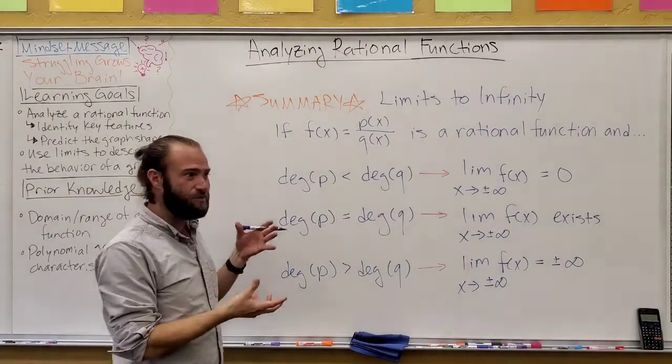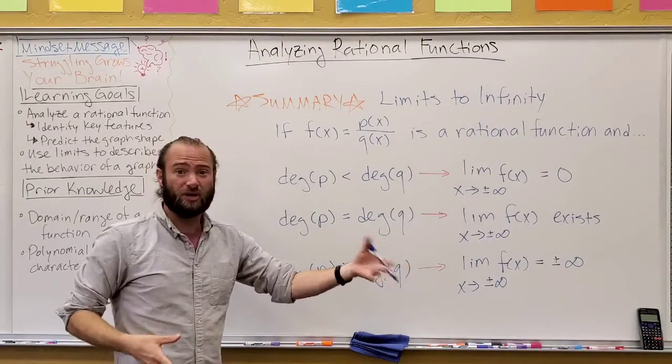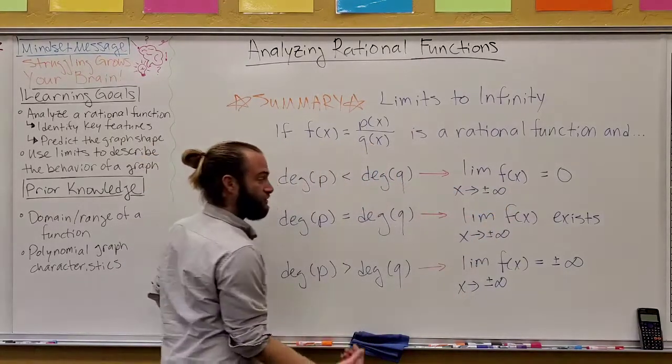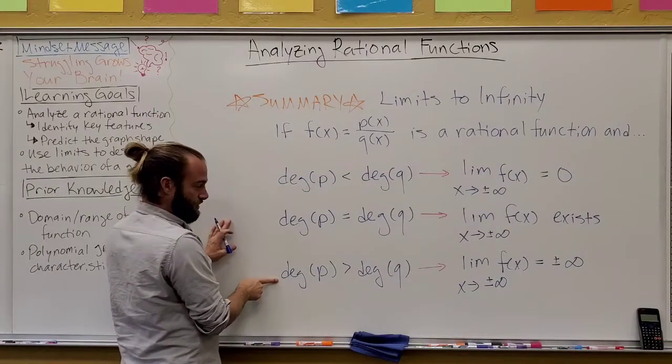If the degree of the bottom exceeds the degree of the top, it's like we talked about in the very last one there, that grows larger quicker than the top, and so as we saw in our other example, that ends up going towards zero. And then I'm going to skip to this last one.